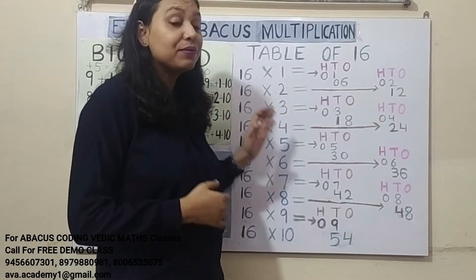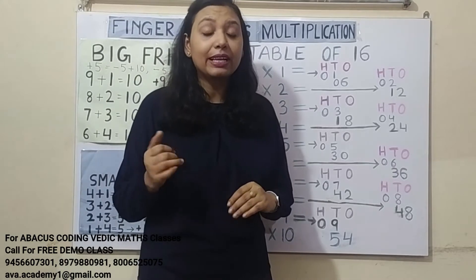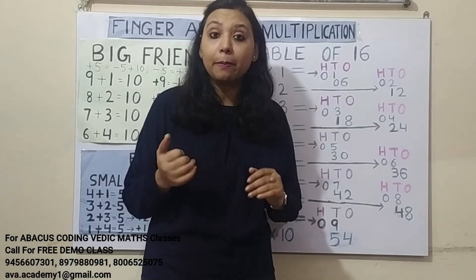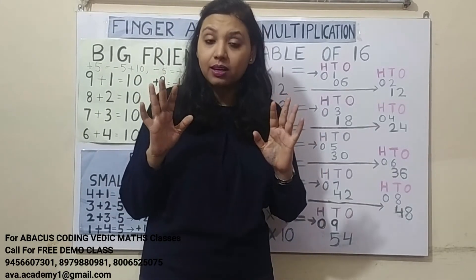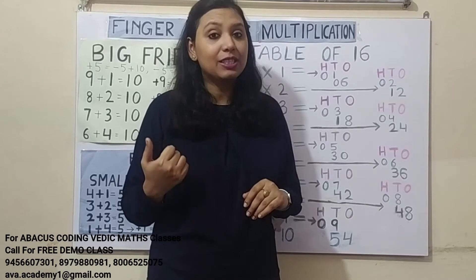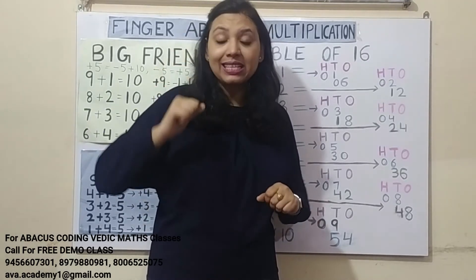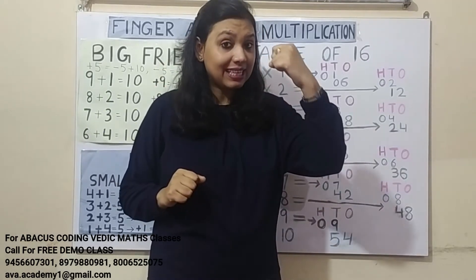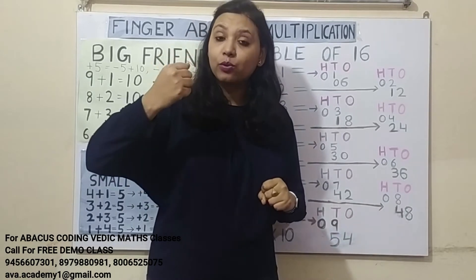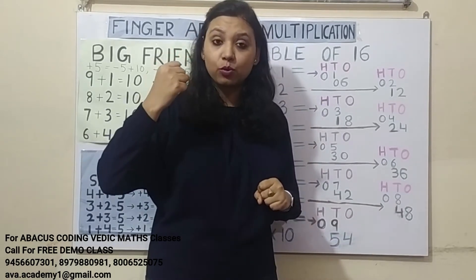Friends, let us first quickly revise the rules. And if you don't know how to represent numbers in fingers, then please watch my previous videos. The right hand is 1's place, and left hand is 10's place. And in right hand only, we represent 100's place.